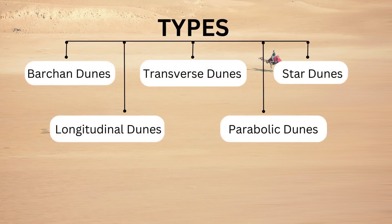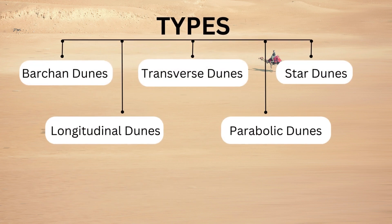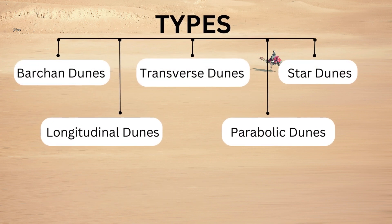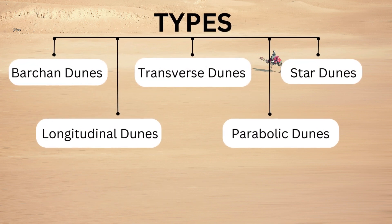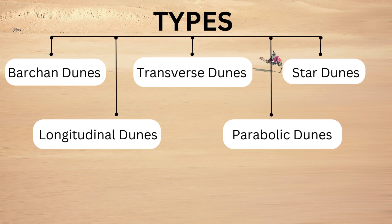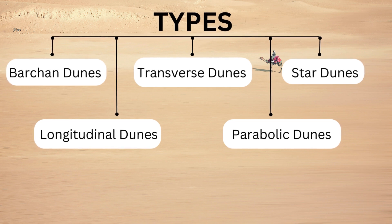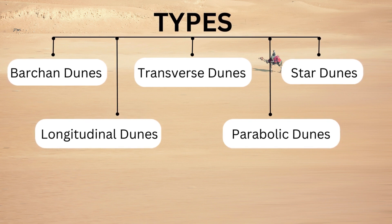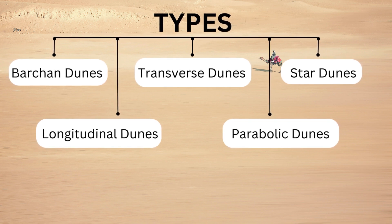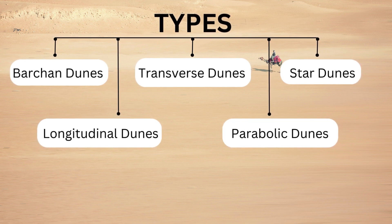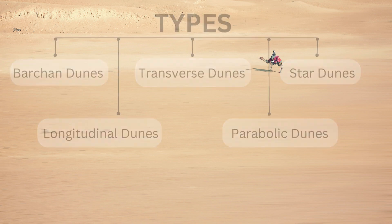Now, types of sand dunes. The first one is barchan dunes. Next, longitudinal dunes, transverse dunes, star dunes, and parabolic dunes. And if you want to know about two more dunes, don't forget to watch till the end.